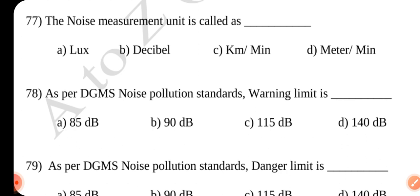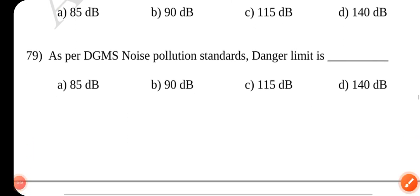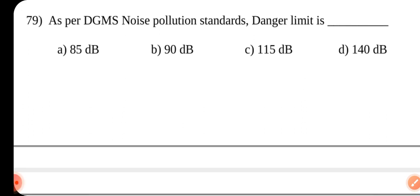Question number 77. The noise measurement unit is measured as dash. As per DGMS noise pollution standards, warning limit is dash. Answer is A 85 decibel. Question 78. Answer is B 90 decibel.